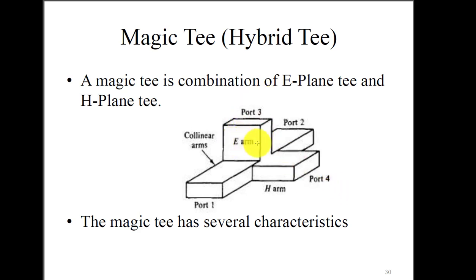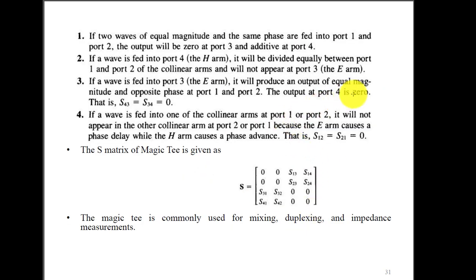If the power is incident at port 3, it divides between ports 1 and 2, and no power comes from port 4. Ports 3 and 4 are therefore isolated ports, with proper separation between them. Similarly, ports 1 and 2 are isolated ports — power incident at port 1 or port 2 divides between the adjacent ports 3 and 4, with no power from port 2 or port 1 respectively. Therefore S34=S43=0 and S12=S21=0. The diagonal coefficients S11, S22, S33, S44 are all zero since all four ports are perfectly matched.